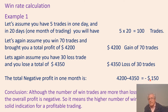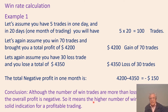Total profit for the month: $4,200 gain minus $4,350 loss = minus $150. Conclusion: although the number of winning trades (70) is more than losing trades (30), the overall profit is negative. This means a higher number of winning trades is not a solid indication of profitable trading.